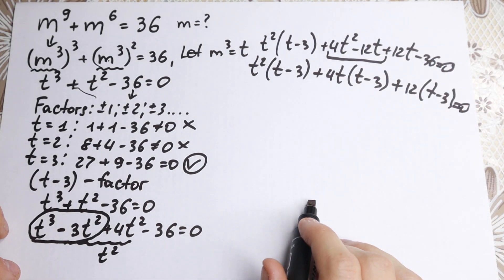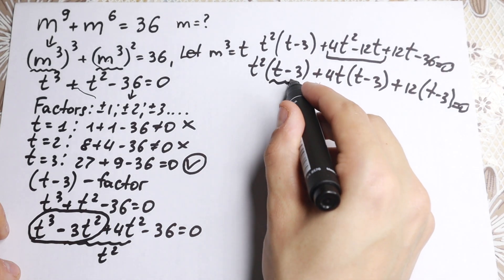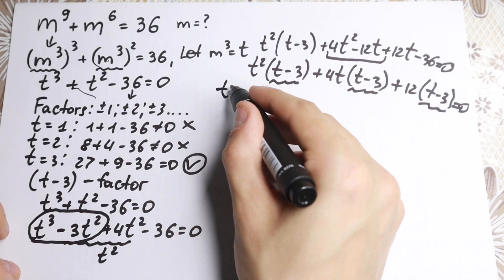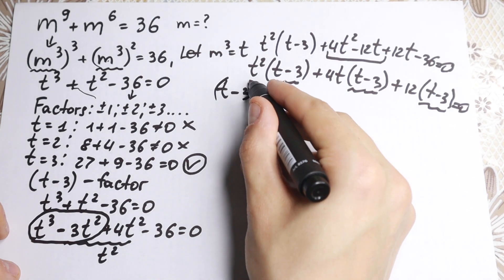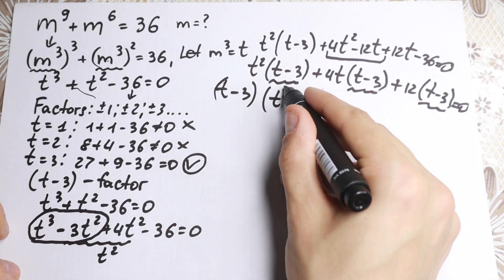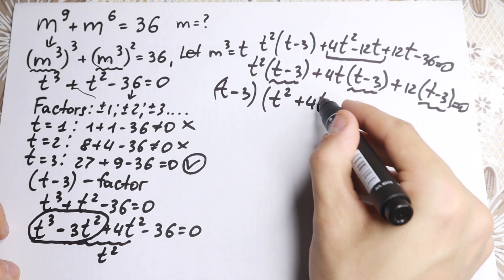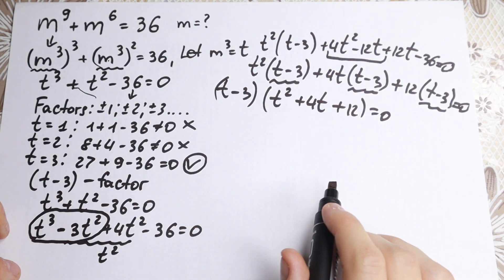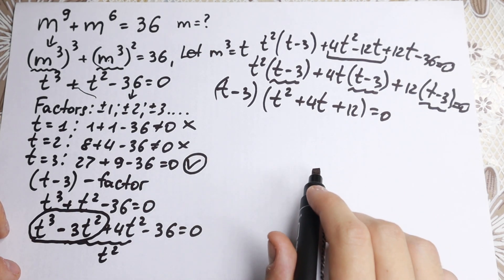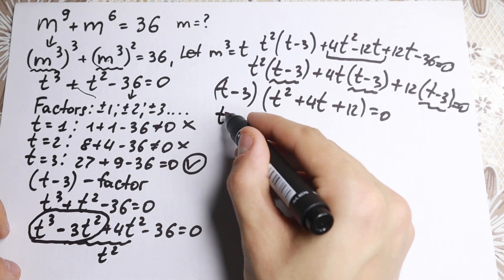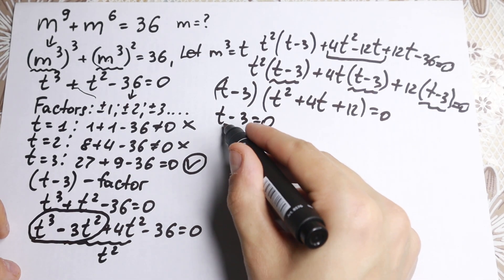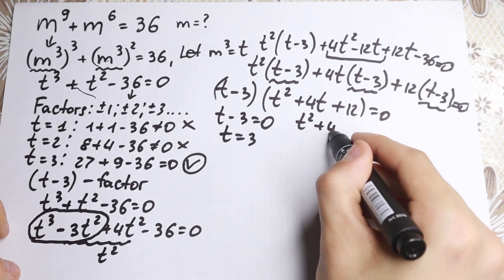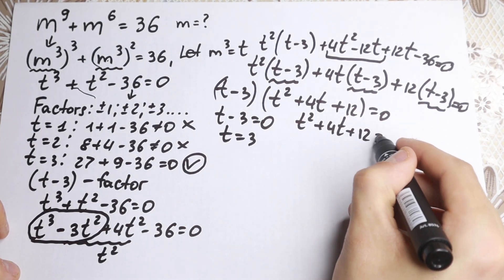We factor out (t − 3) from everything, giving us (t − 3)(t² + 4t + 12) = 0. Setting each factor to zero: from (t − 3) = 0, we get t = 3.